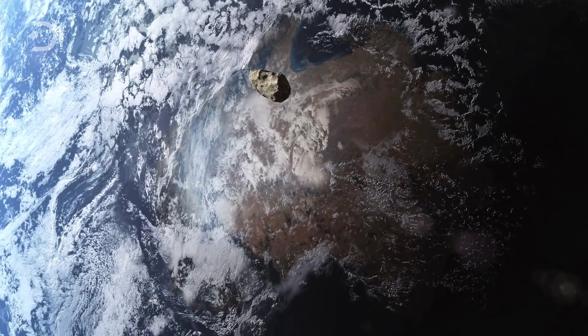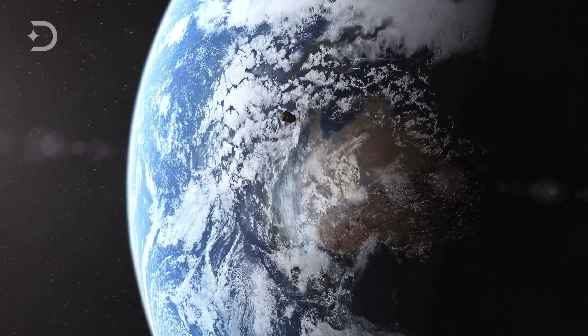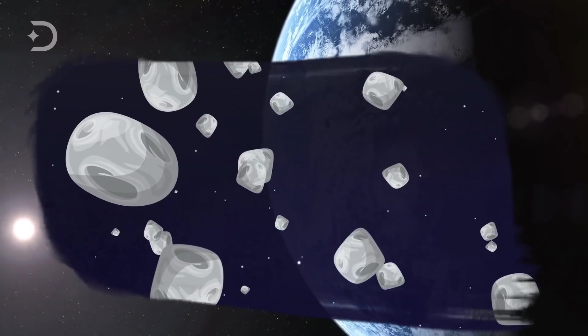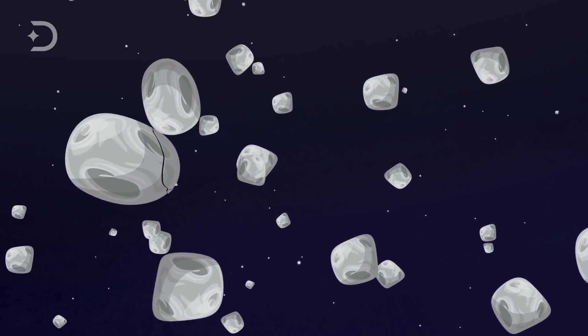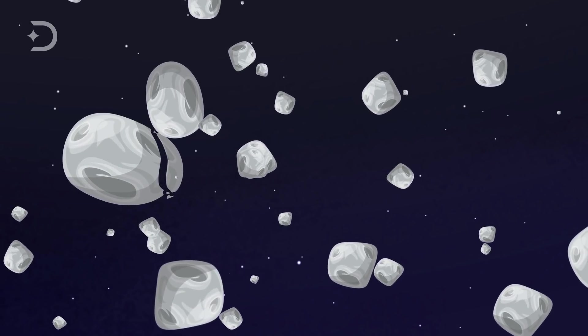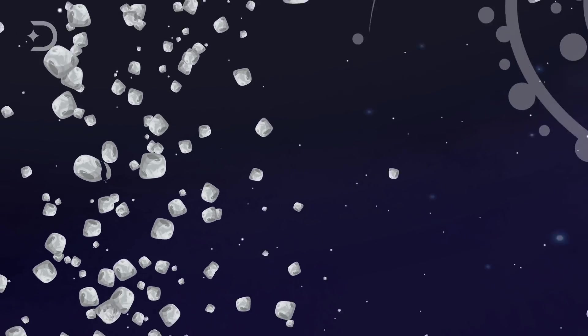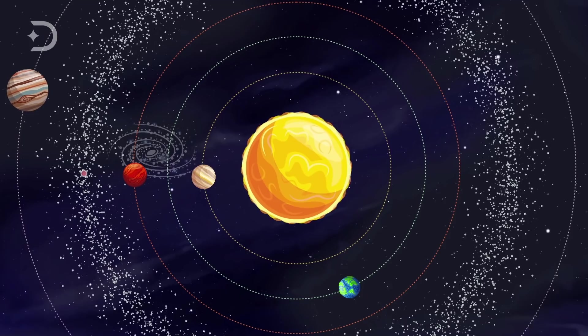It is an ancient relic of our solar system's early days, dating back to more than 4.5 billion years. Scientists say that this space rock likely broke off from a much larger carbon-rich asteroid about 700 million to 2 billion years ago and formed in the main asteroid belt between Mars and Jupiter.